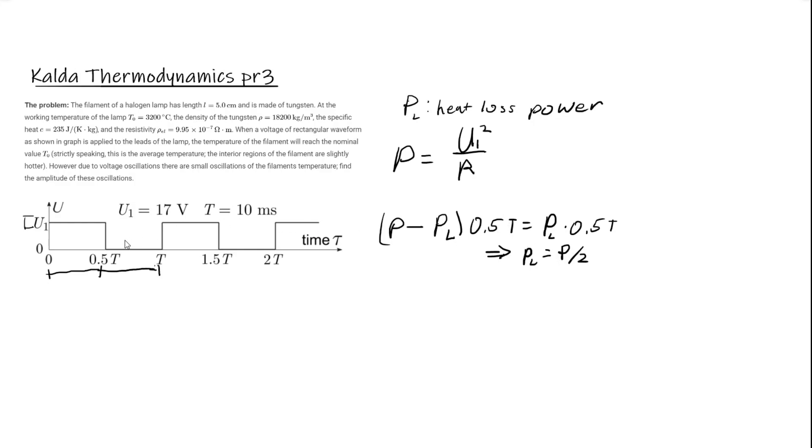This gives us directly P sub L equals P over 2. So now we know the rate at which heat is being lost here and here. The net heating power during this segment, P prime, equals P minus P sub L which equals P over 2.